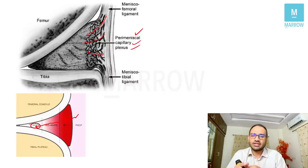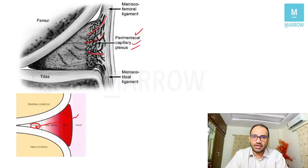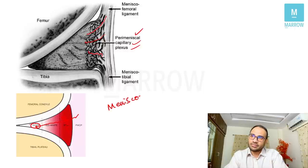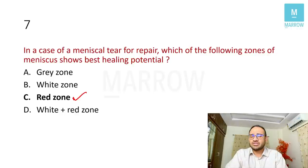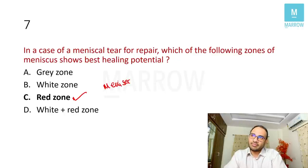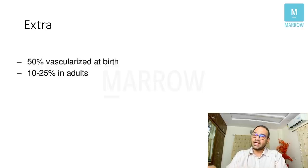The peripheral red zone gets direct blood supply; the central white zone does not get direct blood supply and gets its nutrition from the synovial fluid. If there is an injury in the meniscus, the one that is more vascular will heal better if repaired. So you repair tears in the red zone — this is known as meniscorrhaphy — and the best results come from the red zone. White zone tears do not heal well, so you remove them — meniscectomy. The answer is the red zone.